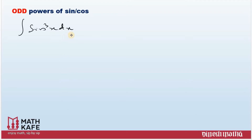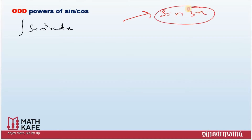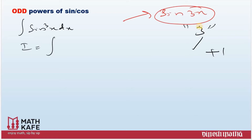Let us see how the integration works. Suppose I need to integrate sin³x dx. There is one straightforward method using the sin 3x formula to convert sin³x and then integrate. Instead of that, I am going to share a general technique which will work for every odd power of sine or cosine. The power should always be separated in 'even plus 1' format - so 3 becomes 2+1, 5 becomes 4+1, 7 becomes 6+1.